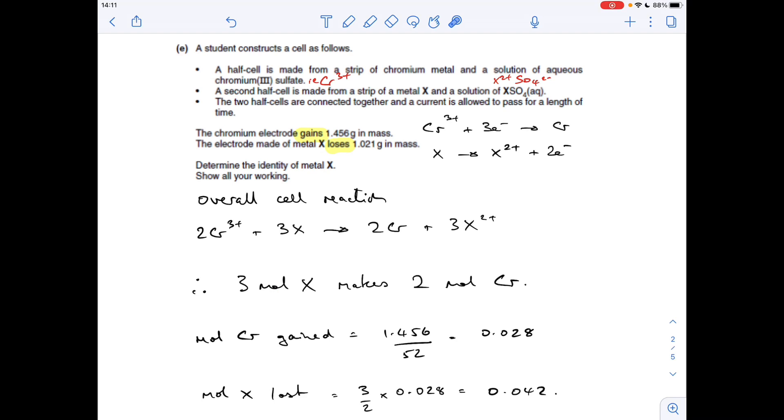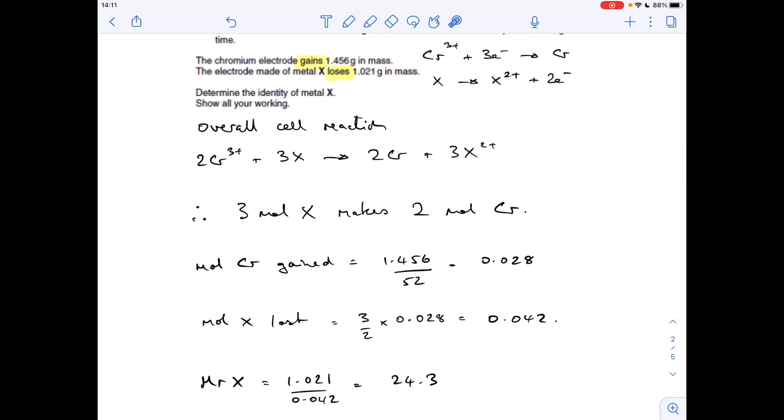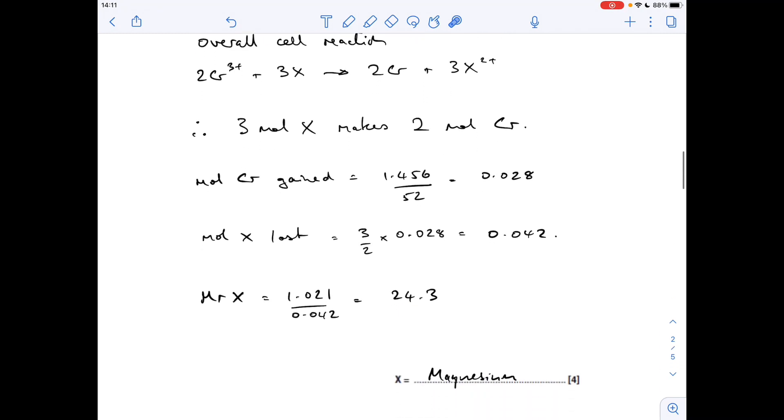The next thing we'll do is work out how many moles of chromium was gained, because we know the mass and the MR from the datasheet. So we can tell that 0.028 moles of chromium has been gained, and the ratio tells us that 3 over 2 times those moles of X must have reacted. We know how many grams that equates to, so we can work out the MR of X. Mass over moles, 24.3. So X must be magnesium.